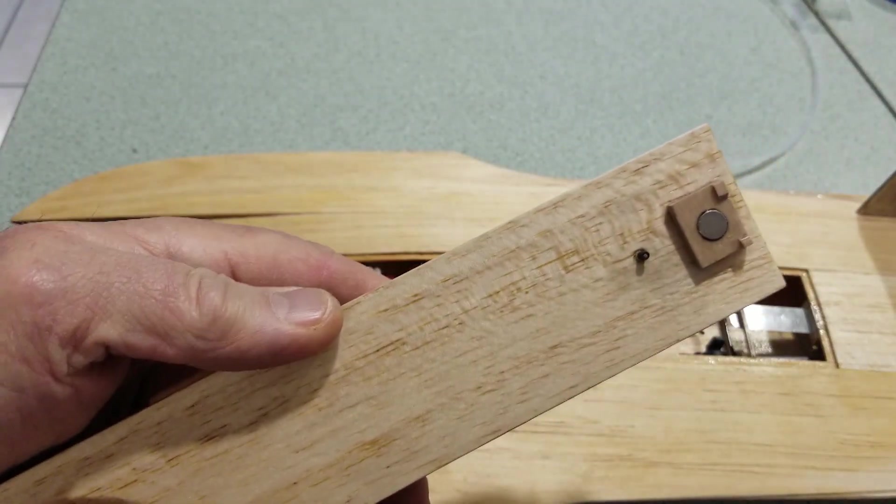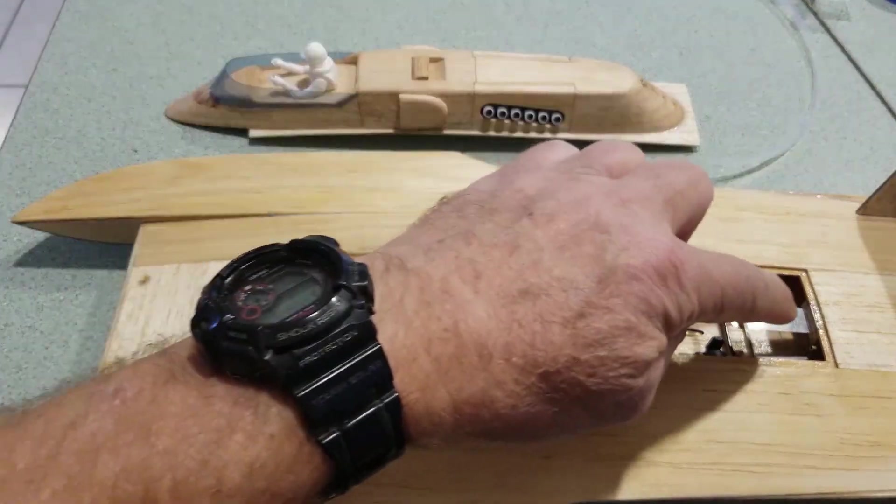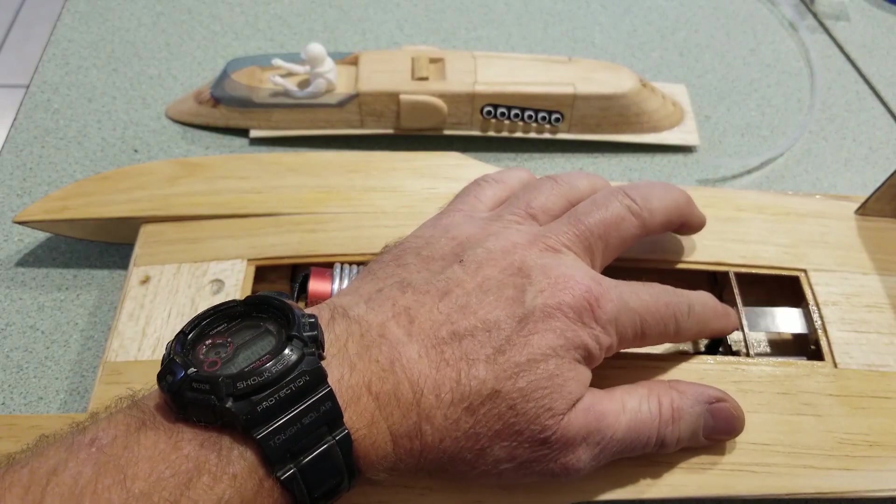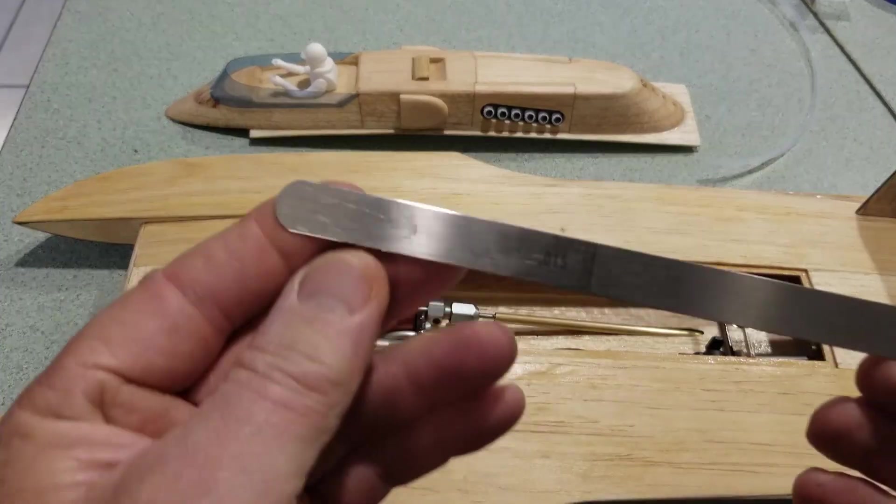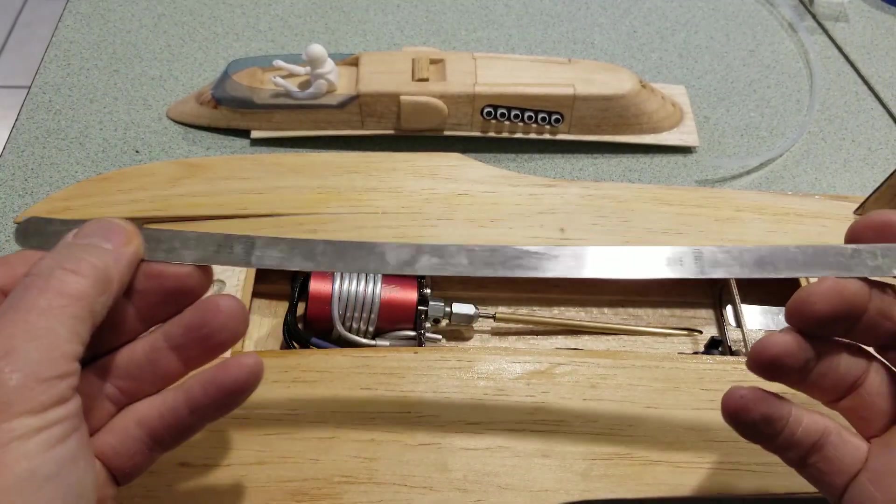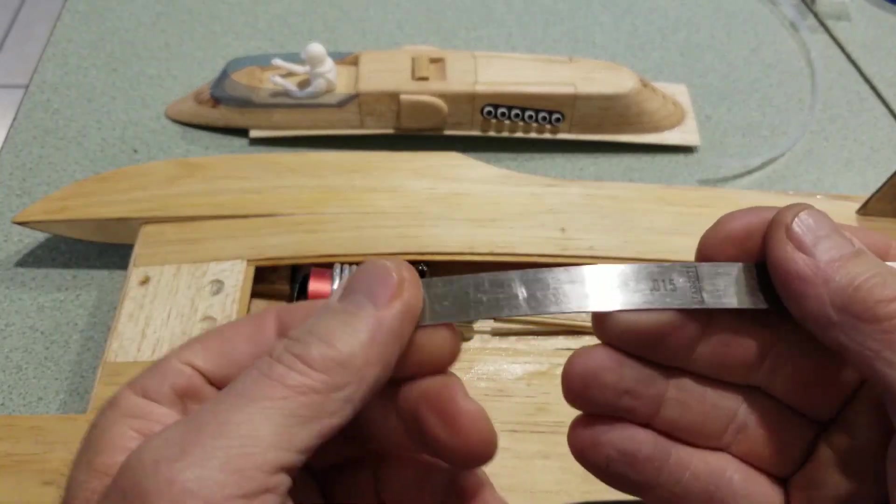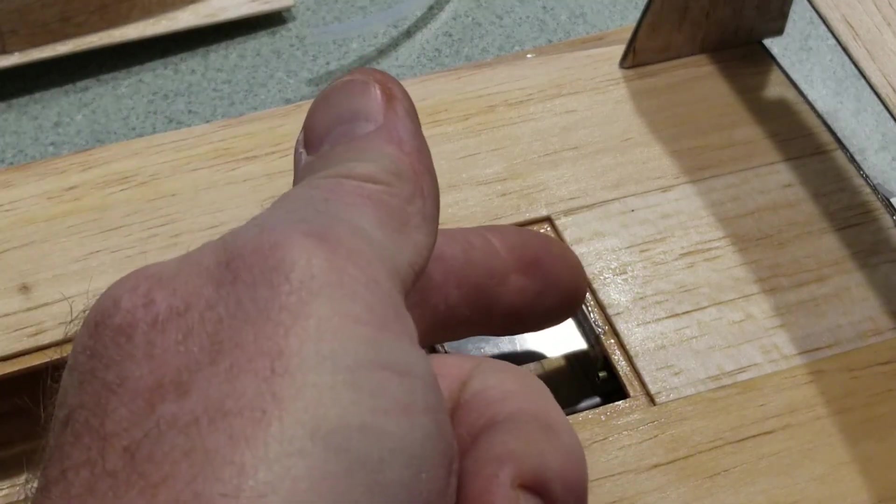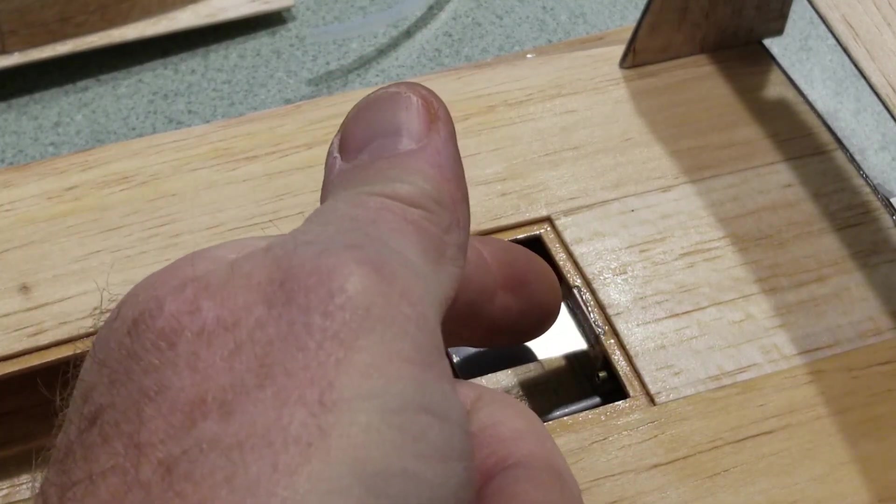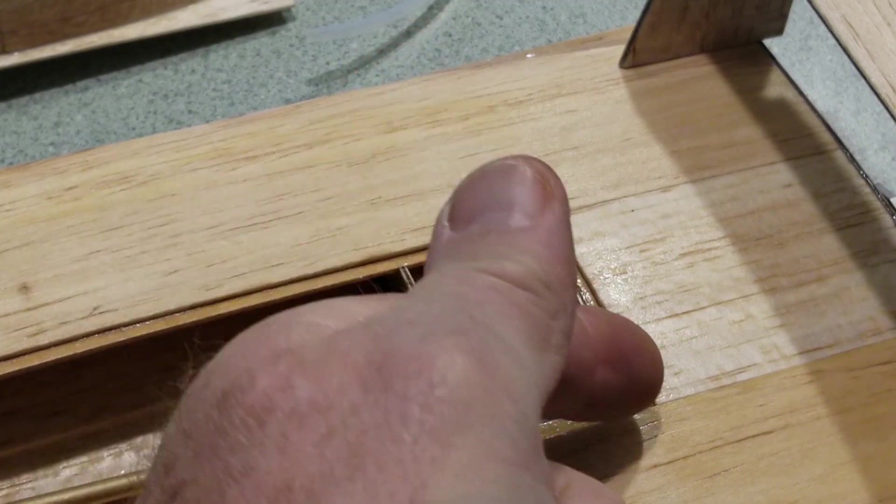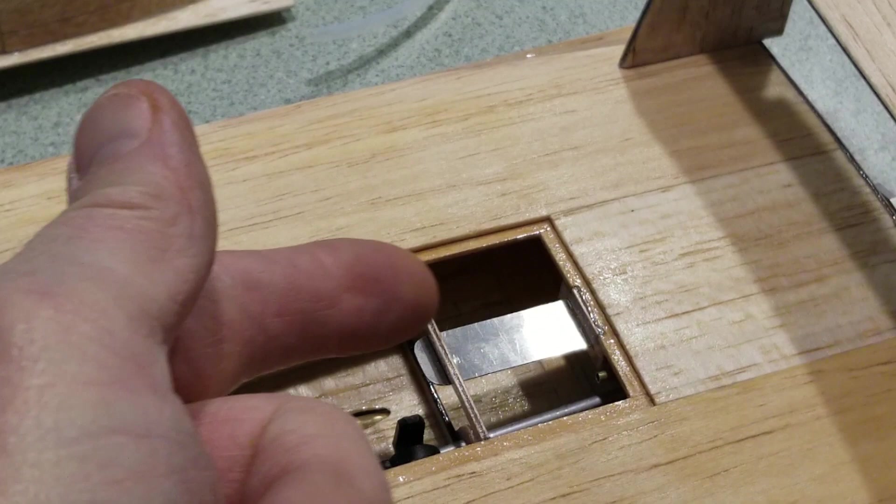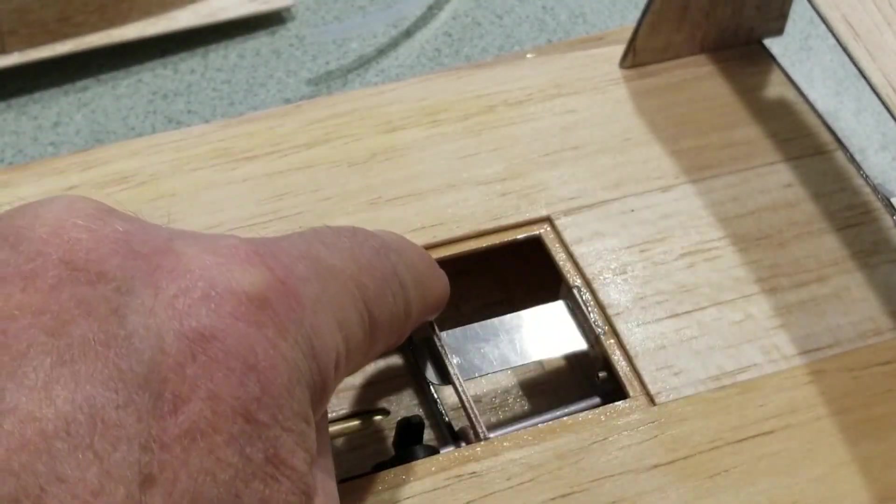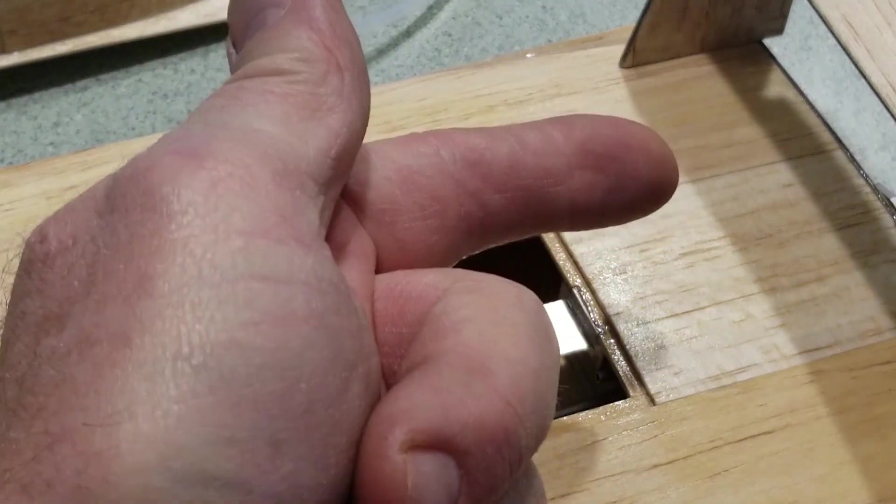The rear magnet sticks to this spring right here. This is also the mechanism that causes it to release. I made that from a piece of 15 thou shim stock, which is basically spring steel. It goes through this piece of 1/16th ply, which is notched and epoxied into this piece of basswood here, and it's setting up under a former back here.